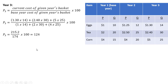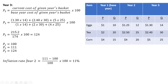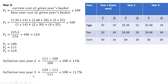Now let's calculate the inflation rate in year two and year three. Here are our price indices for each year. The inflation rate in year two is the percentage change from 100 to 111, giving us 11 percent. The inflation rate in year three is the percentage change from 111 to 124, which gives us approximately 12 percent.